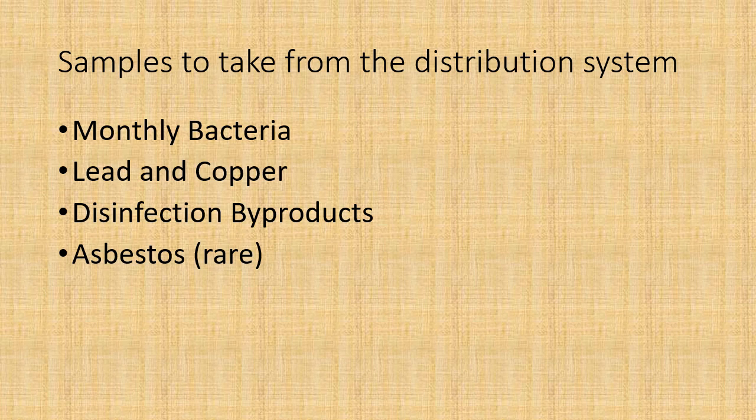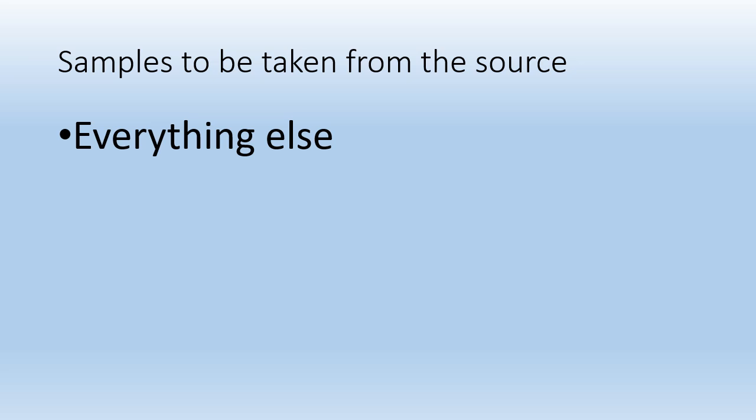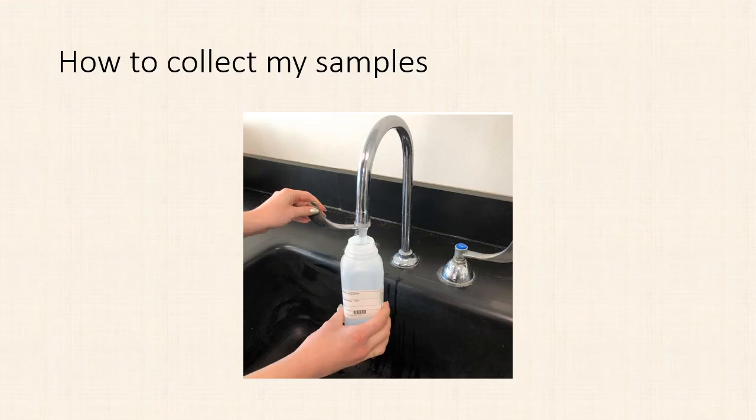Things you need to take from the distribution system include your monthly bacteria from whatever spots are listed on your sampling plan, lead and copper from individuals' homes, disinfection byproducts from a specific place in your distribution system — either the midpoint or the oldest water — and asbestos in rare cases. The source is where you take just about everything else; if it's not one of those mentioned, you take it directly from your source.